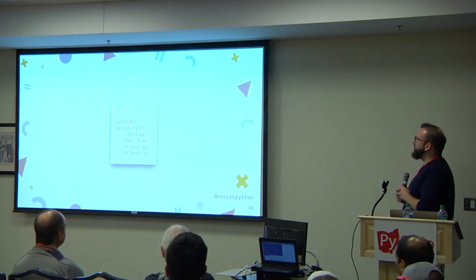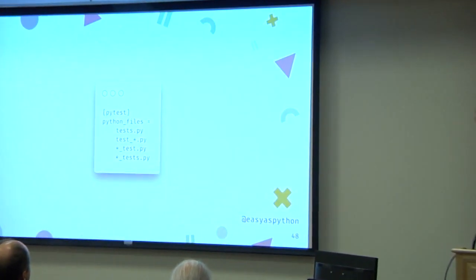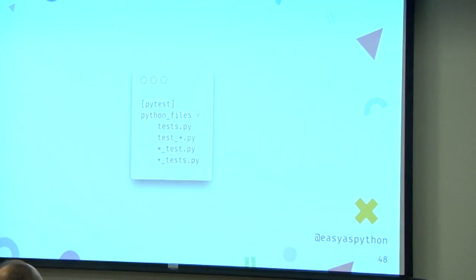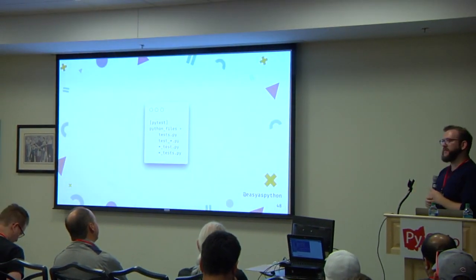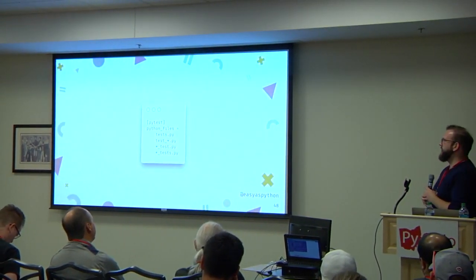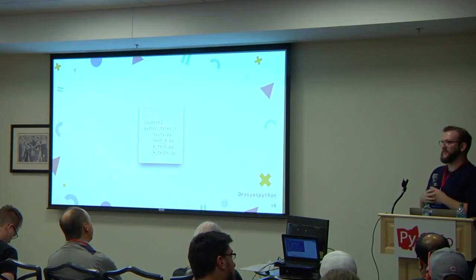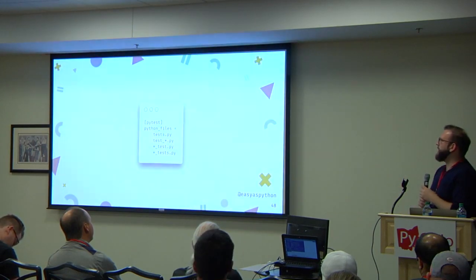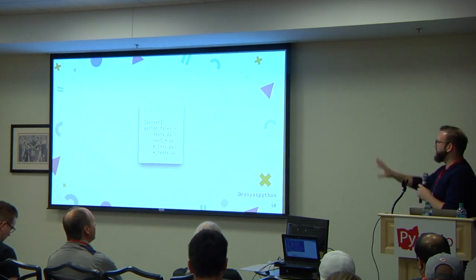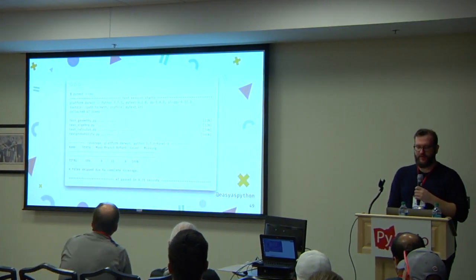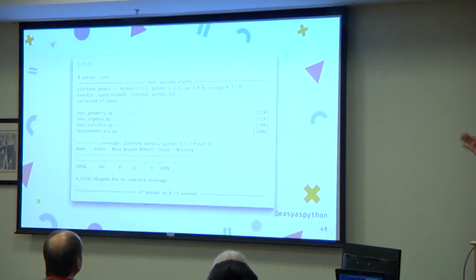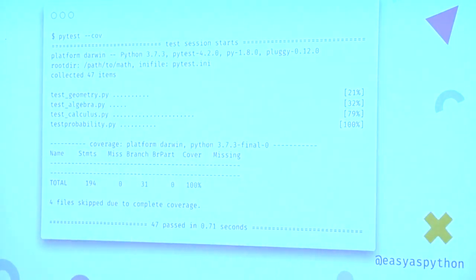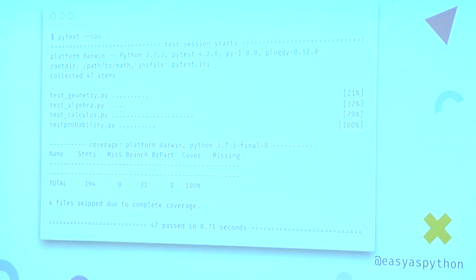There's a pytest.ini file with a [pytest] section and settings, one of which is 'python_files' where you pass a list of filename patterns for finding tests. I recommend when first introducing pytest that you be very liberal with this list of patterns to make sure it finds all your tests. Then as you settle on consistent naming practices, you can slowly rename those test modules and eventually remove this setting. After adding that setting and rerunning with coverage, the project is fully covered again — test_probability.py is now discovered — and we have 47 passing tests again.